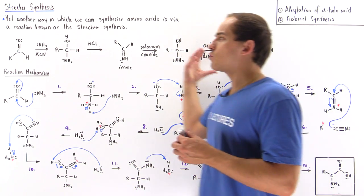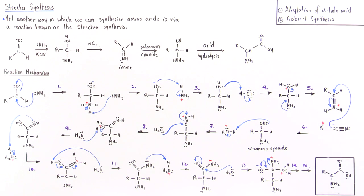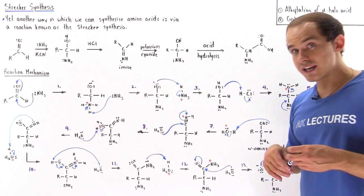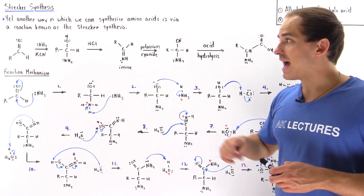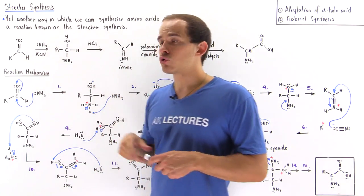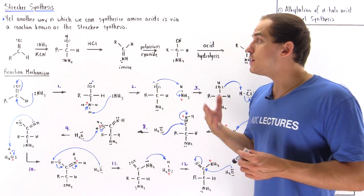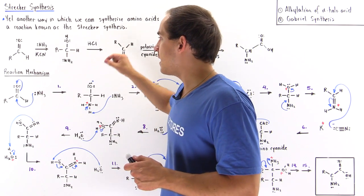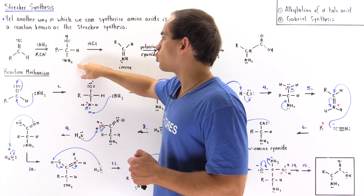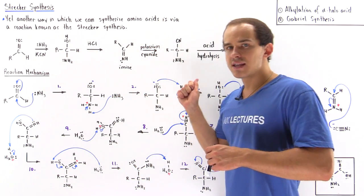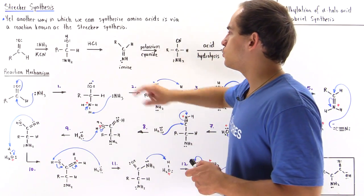First let's take a look at the general outline of this reaction, and then let's look at the details, as the reaction mechanism is quite lengthy. Basically we take some type of aldehyde containing some R group and mix it with ammonia in the presence of potassium cyanide. We produce a molecule where we add an H atom to the oxygen and add our amine group onto our carbon. In the next step we add hydrochloric acid to produce our amine.